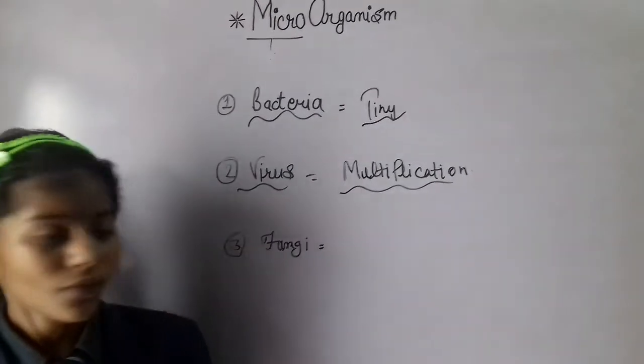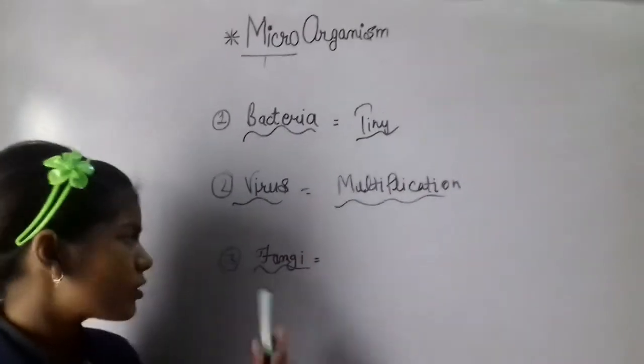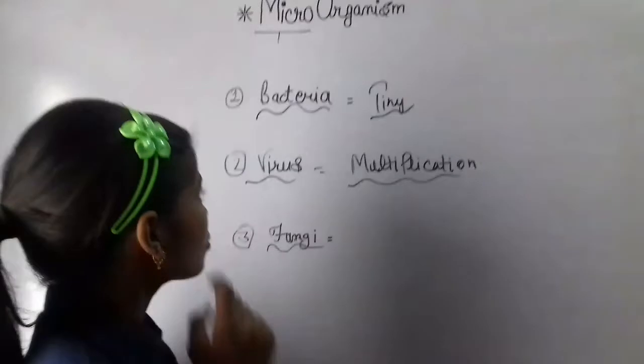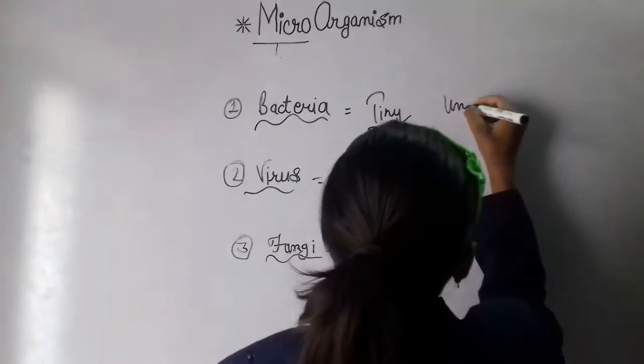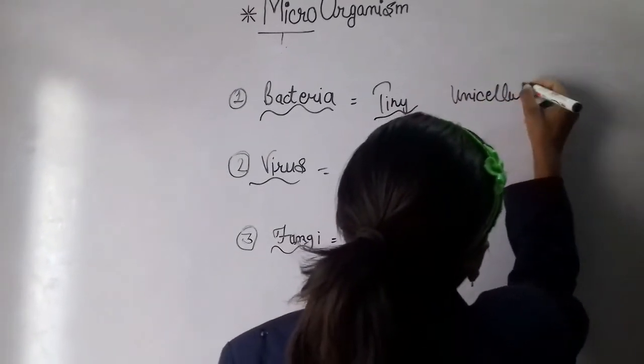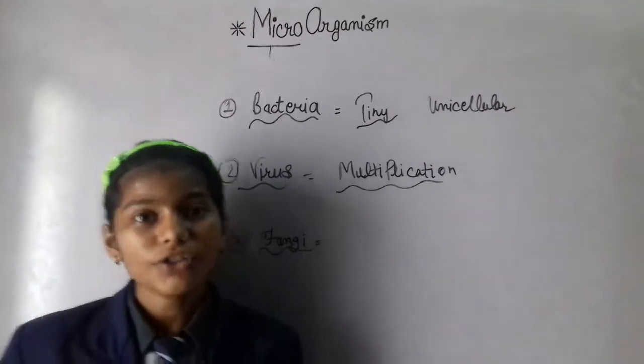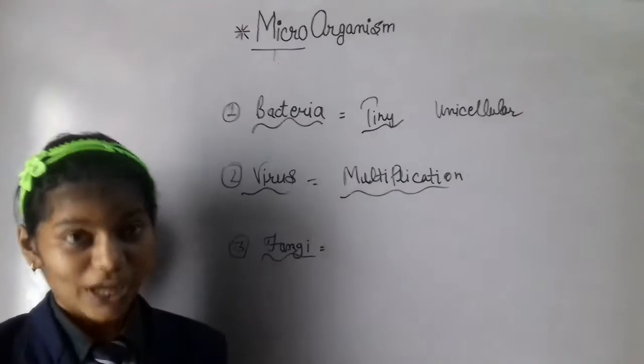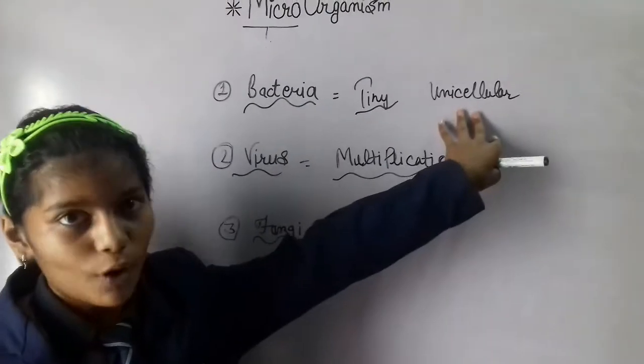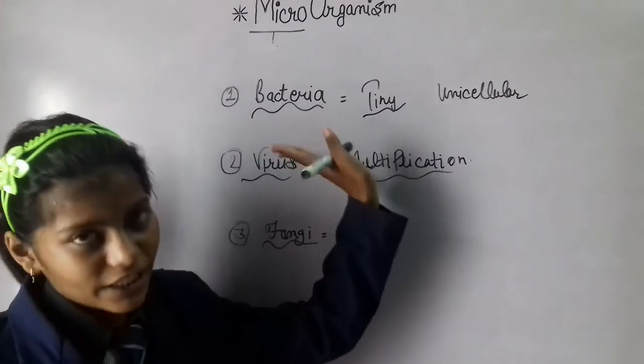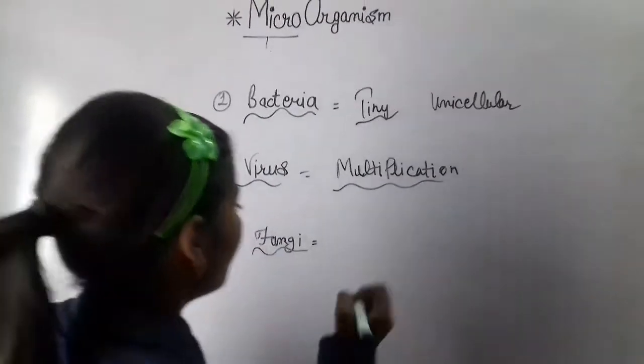Fungi also causes many diseases. Bacteria are unicellular prokaryotic cells, which I told you about in the video of prokaryotic cell and eukaryotic cell, that prokaryotic cell is found in unicellular form. So unicellular bacteria is the prokaryotic organism.